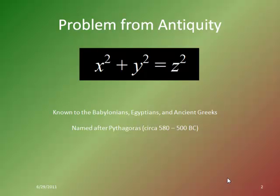We start off with a problem that's very familiar: x squared plus y squared equals z squared. This problem was known to the most ancient of cultures — the Babylonians and the Egyptians both used it for helping to measure various areas. The ancient Greeks were very familiar with it. It's in Euclid's Elements, and it gets its familiar name from Pythagoras, an ancient Greek who lived about 580–500 BC. So we call this the Pythagorean Theorem.